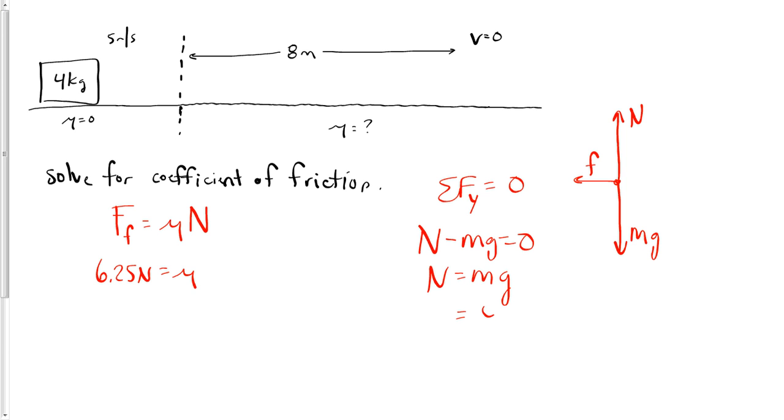Mass of 4 kg times gravity gives 40 N of normal force. That goes right back into our definition of friction and we solve for μ. 6.25 divided by 40 is 0.16, and no units on the coefficient of friction.